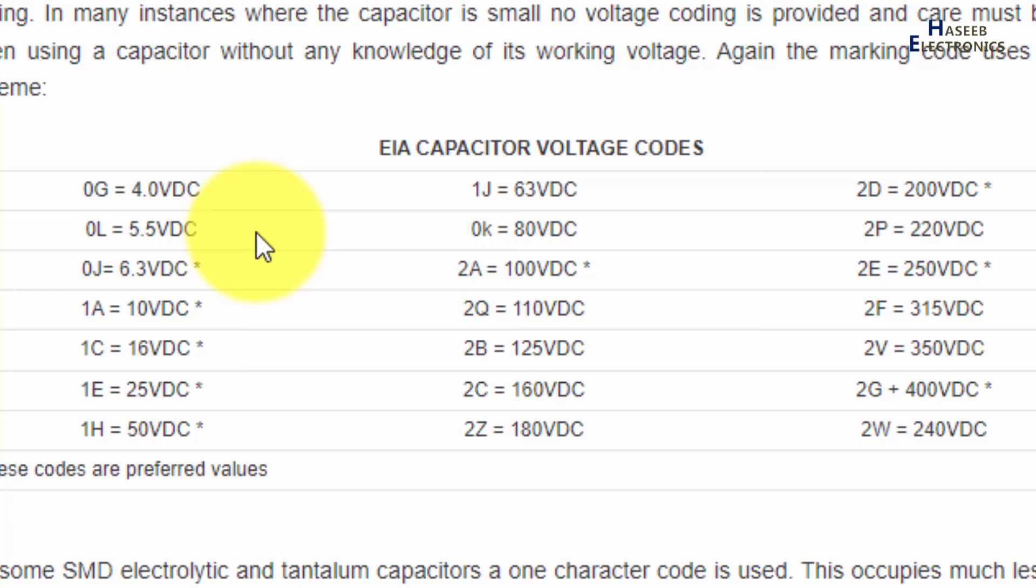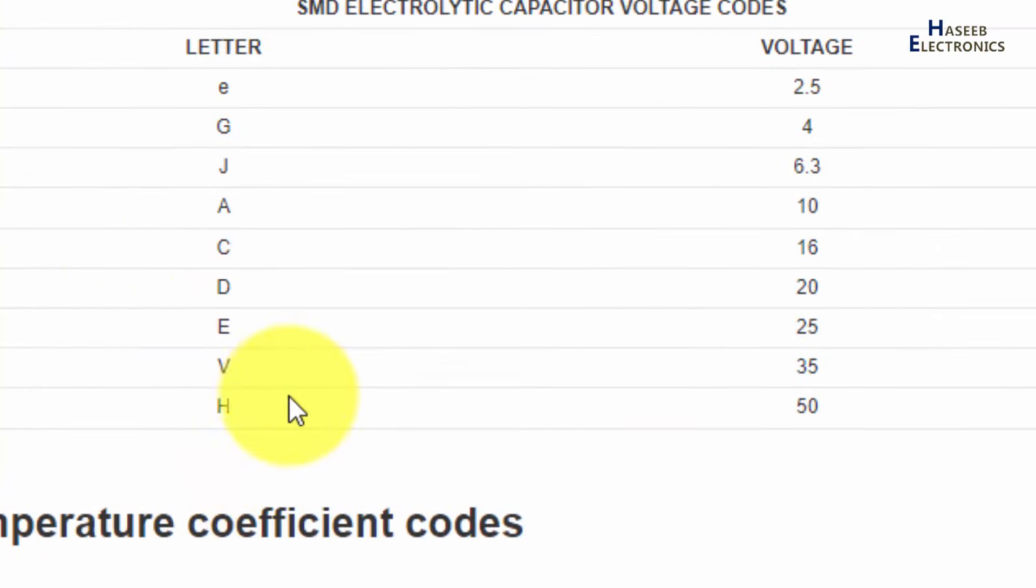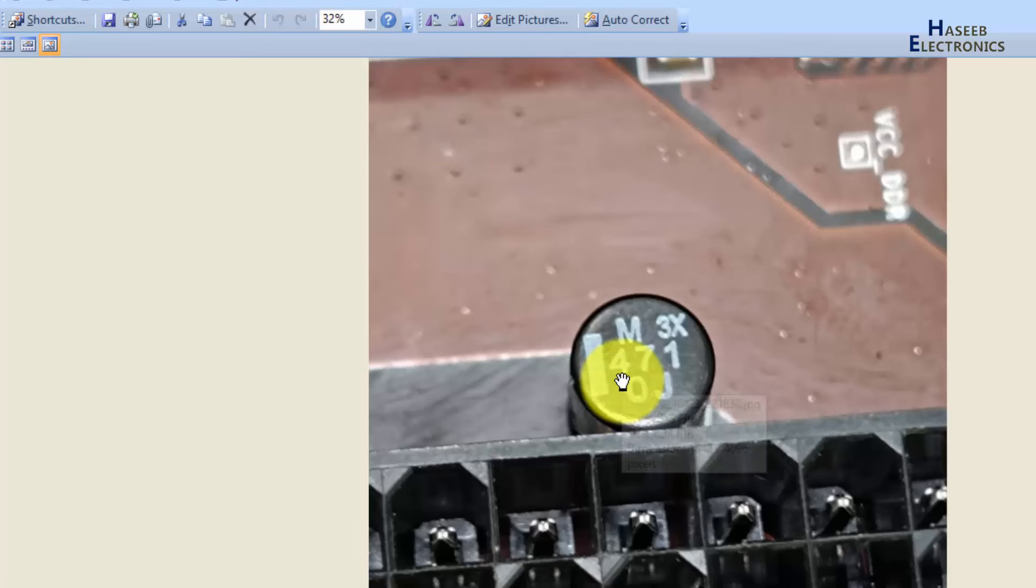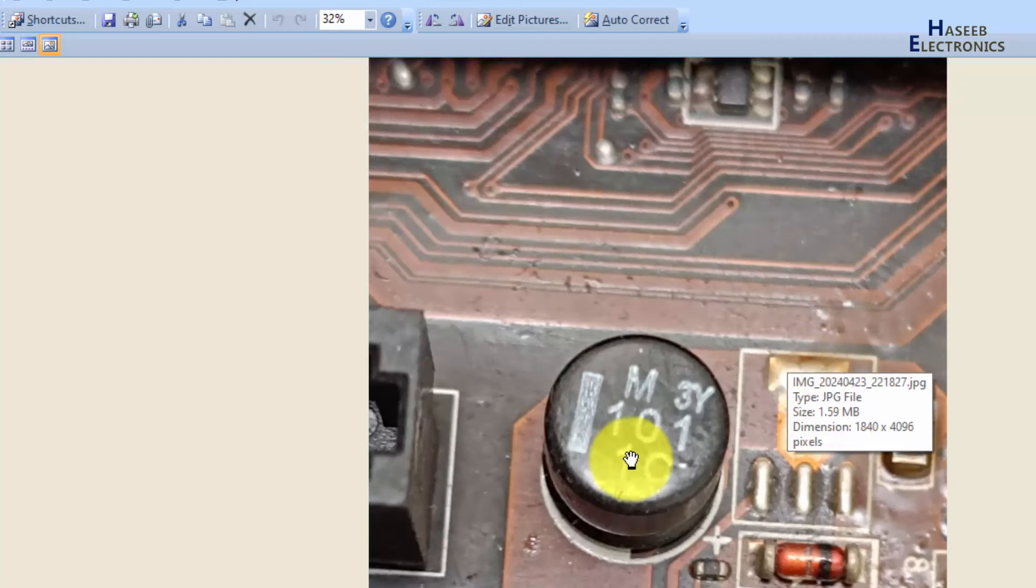0G, 0A, 0L—in our case, 0J. It is 6.3 volt DC. Then M, this M plus minus 20 percent tolerance. We can say this capacitor is 470 microfarad, 6.3 volt, 20 percent tolerance. If we see this one, it is 20 percent, 1-0-1—100 microfarad, 1C.